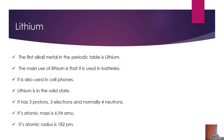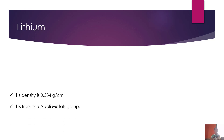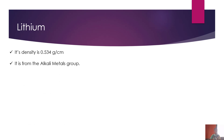Its atomic mass is 6.94 amu — that's atomic mass unit. Its atomic radius is 182 pm. Its density is 0.534 grams per centimeter. It is from the alkali metals group.